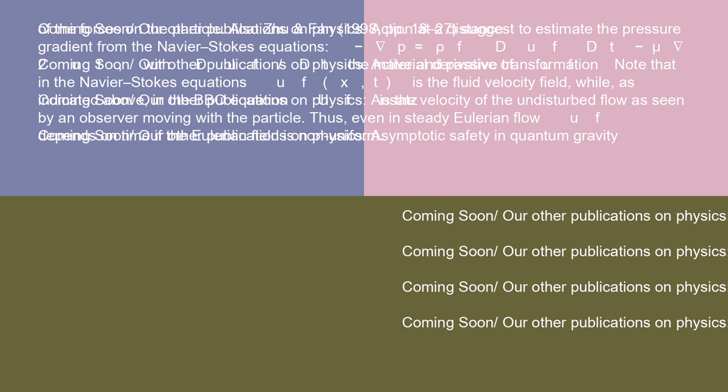Note that in the Navier-Stokes equations uf(x,t) is the fluid velocity field, while, as indicated above, in the BBO equation uf is the velocity of the undisturbed flow as seen by an observer moving with the particle. Thus, even in steady Eulerian flow uf depends on time if the Eulerian field is non-uniform.